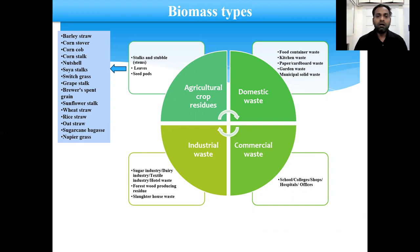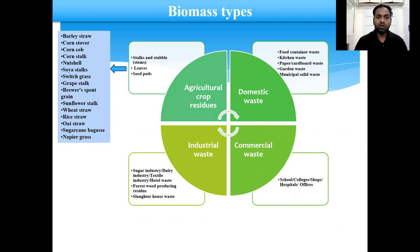Basically, these are agriculture crop residues of different types which mainly consist of stem, leaves, seed pod of different types of agriculture crop residues such as napier grass, sugarcane bagasse, oat straw, rice straw, wheat straw, sunflower stock, grape stock, switchgrass, soya and nut shell, corn stock, corn cob, corn stover, and barley straw.